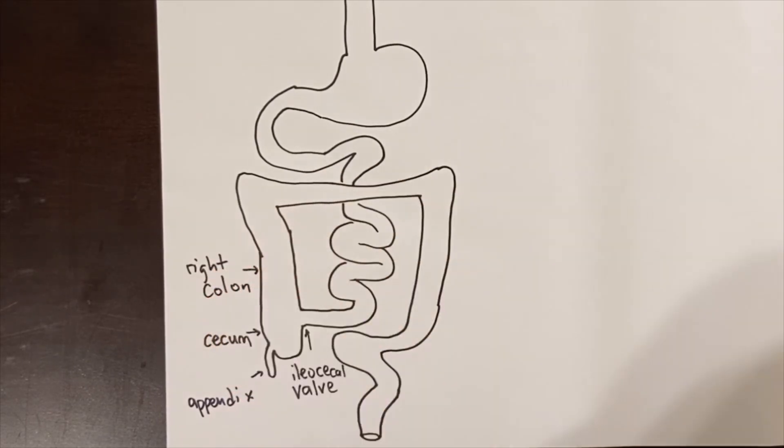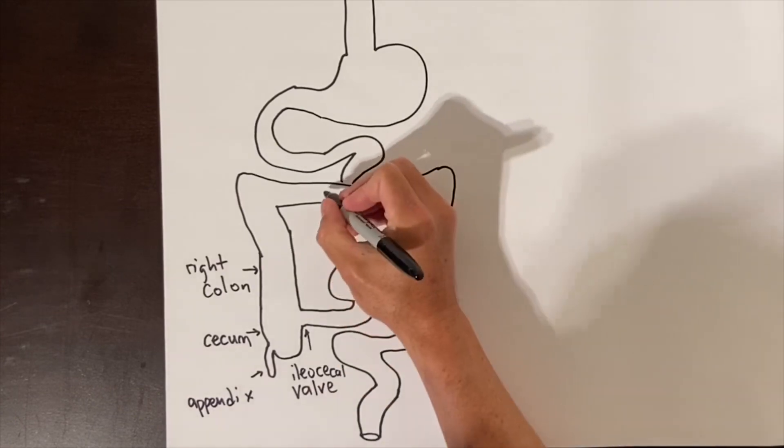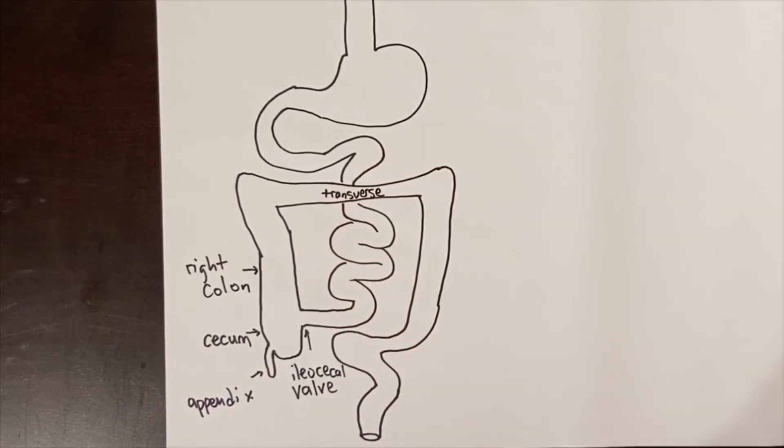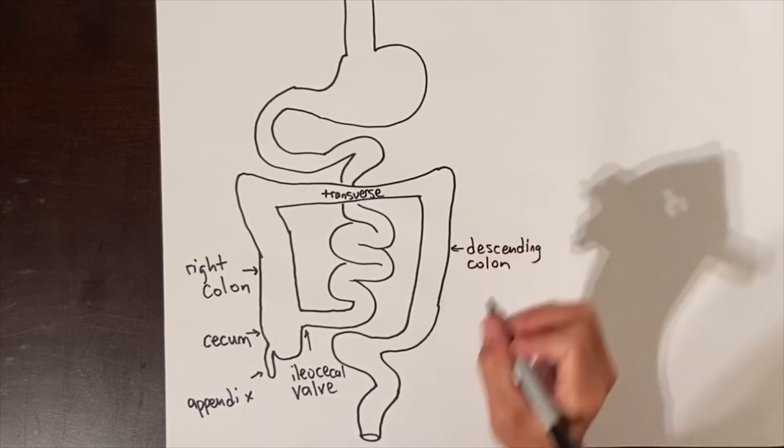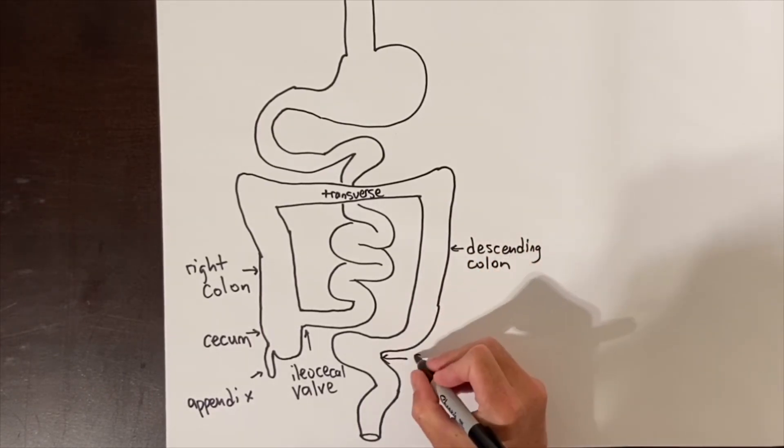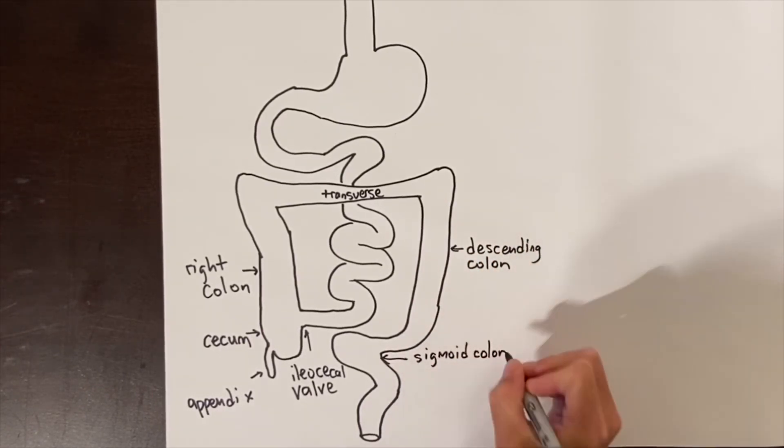The colon then runs up the right side of the abdomen, generally called the right colon. It turns at the liver, runs across the abdomen to the left side, generally called the transverse colon, down the left side, generally called the descending colon. It loops in a C or S shape called the sigmoid colon, and then down through the pelvic soft tissue as the rectum and out as the anus.